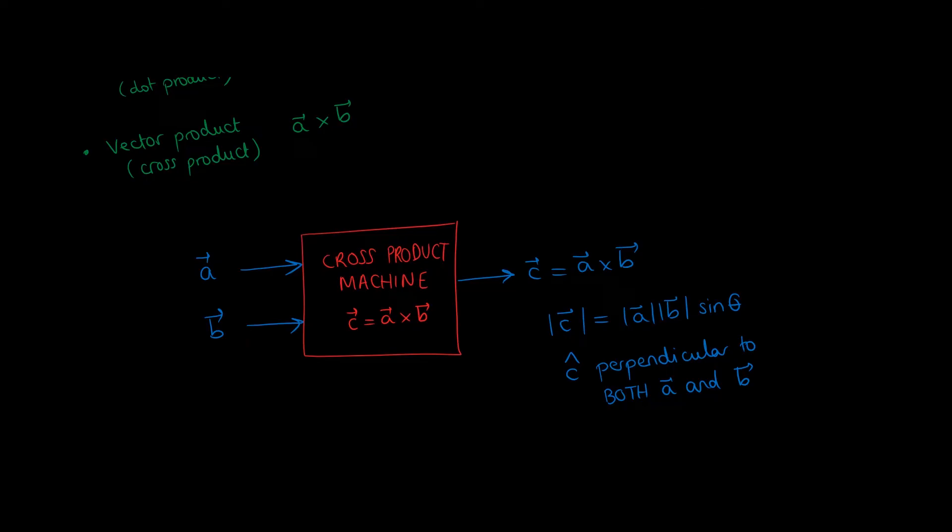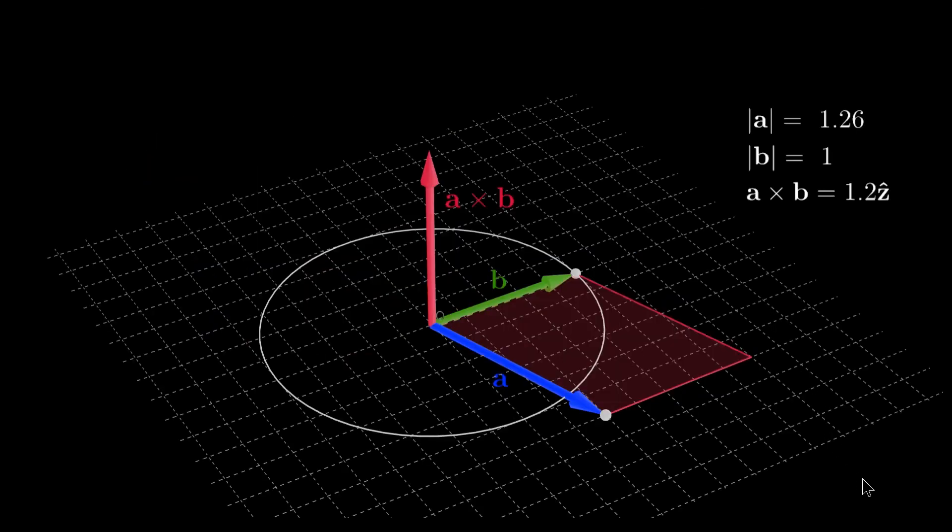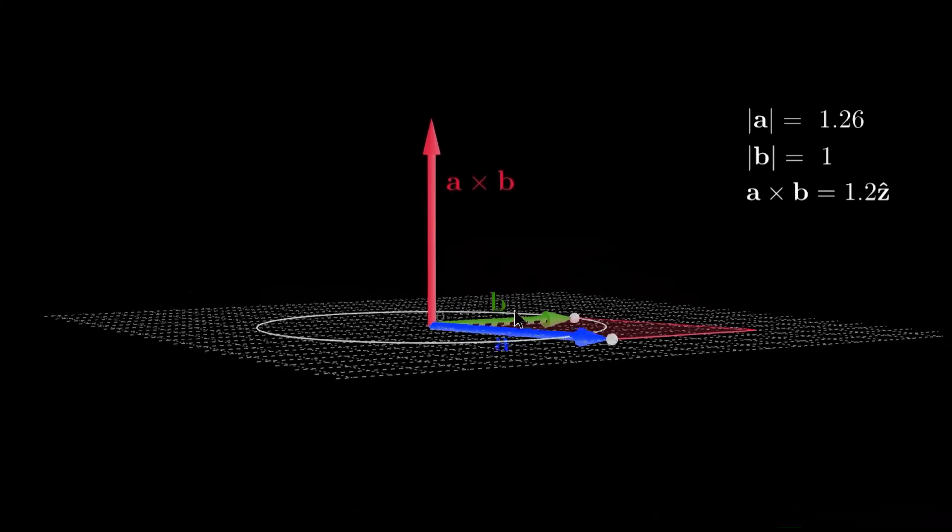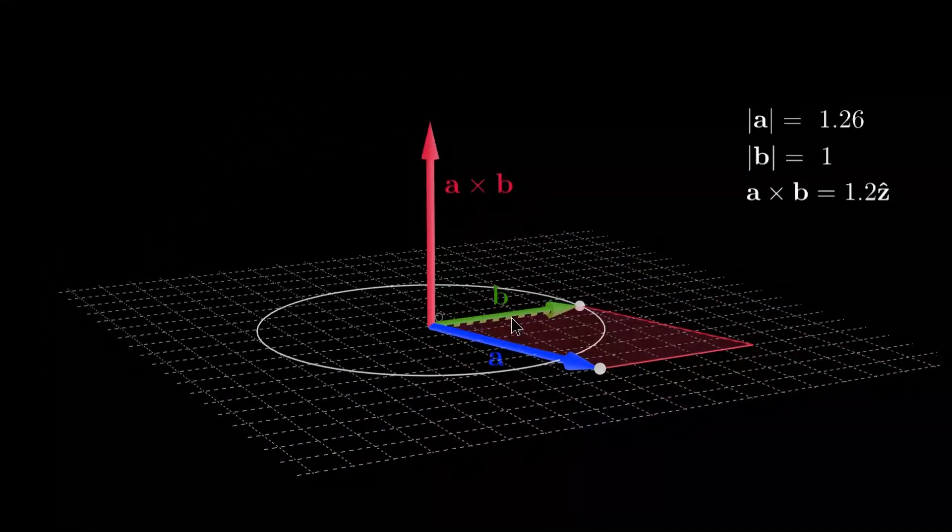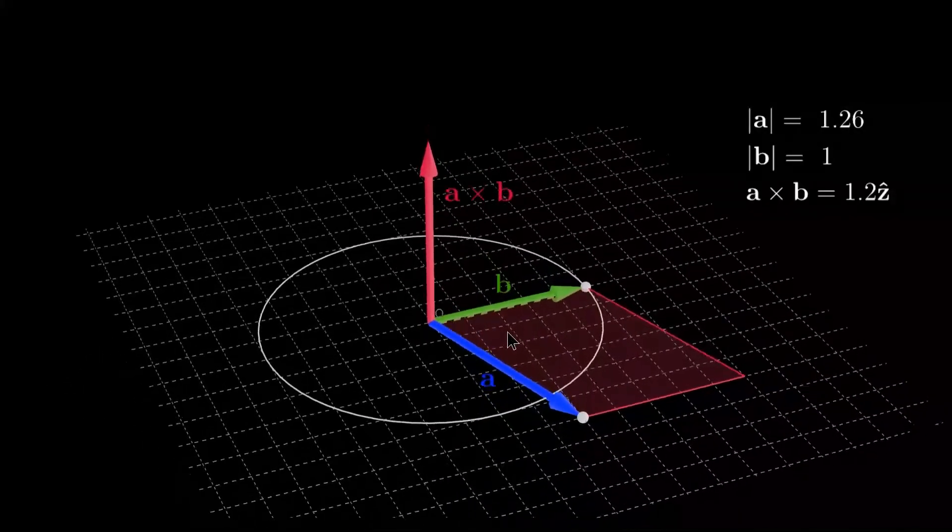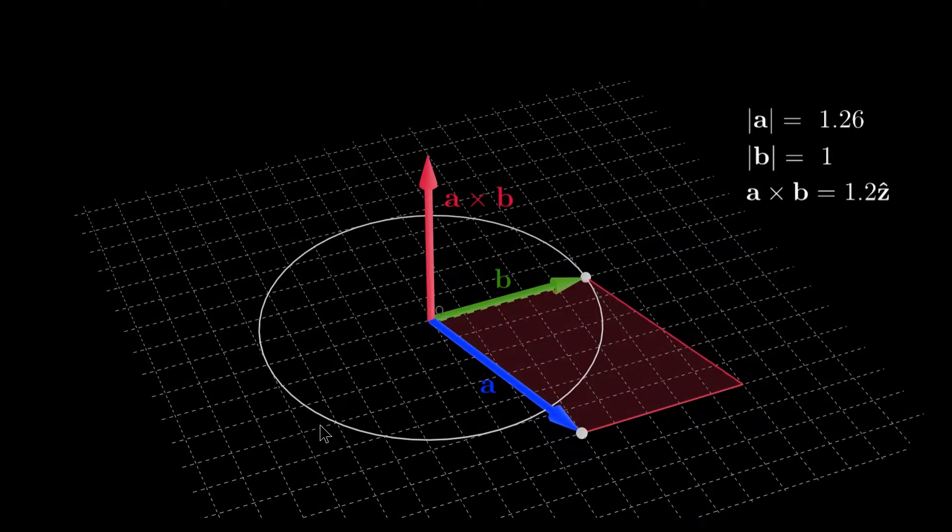Let's see an example. Here, we have a geometric representation of the cross product. We see vector a, vector b, and the cross product vector a cross b. This circle is for reference, and it has a radius of 1. The first thing to notice is that the vector a cross b is directed perpendicular to both a and b. It's perpendicular to the plane that contains vectors a and b. And it is pointing in a direction defined by the right-hand rule.